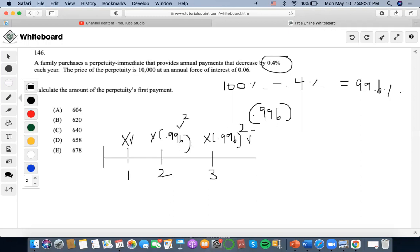Now, how would we find the present value of this geometric sequence? We would do first term over 1 minus common ratio. So first term here would be, I'll take X now, and then I'll make first term V over 1 minus common ratio is 0.996 V.